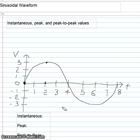Associated with the waveform are several values. The first is the instantaneous value, which represents the value of the voltage or current at any given time.